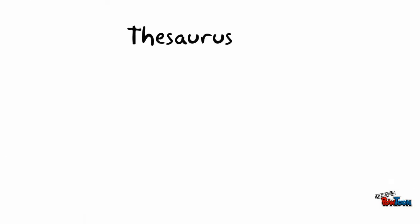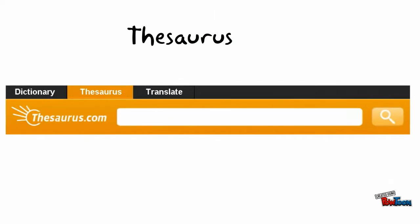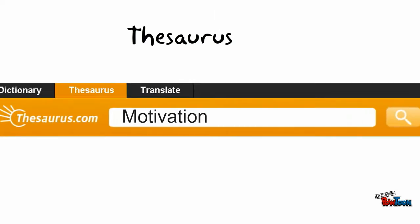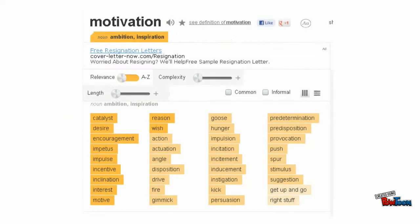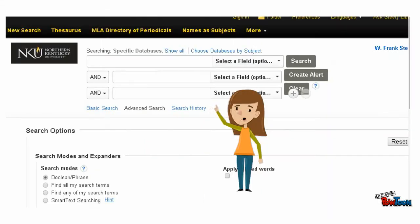First, let's talk about the word thesaurus. We know what that is — we can type in a word and retrieve similar words. So a word like motivation could also be expressed as catalyst or inclination.